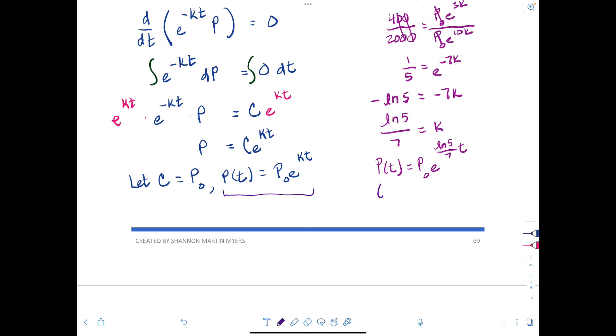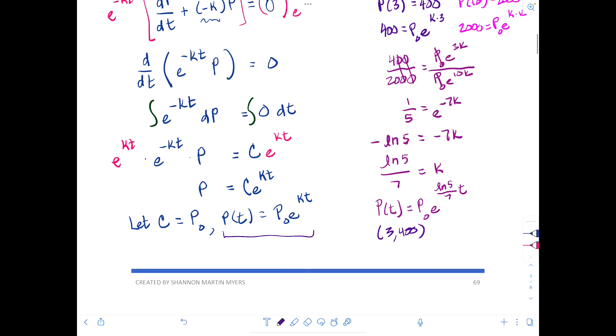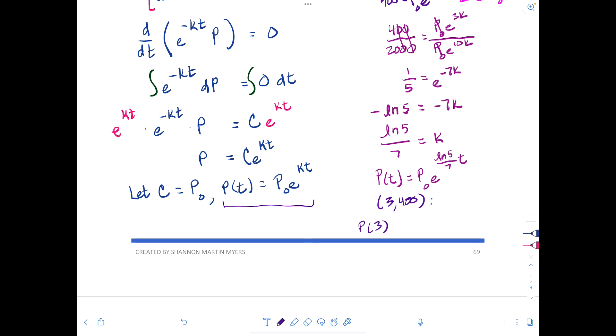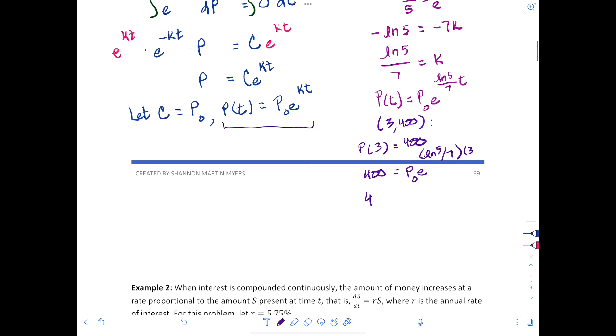We can say P at 3 is equal to 400. So 400 is equal to P₀ e to the natural log of 5 all over 7 times 3, plugging in 3 for time. So we would have 400 equals P₀ e to the 3 natural log of 5 over 7. Once you isolate P₀, you'll get approximately 201 bacteria is what we started with.